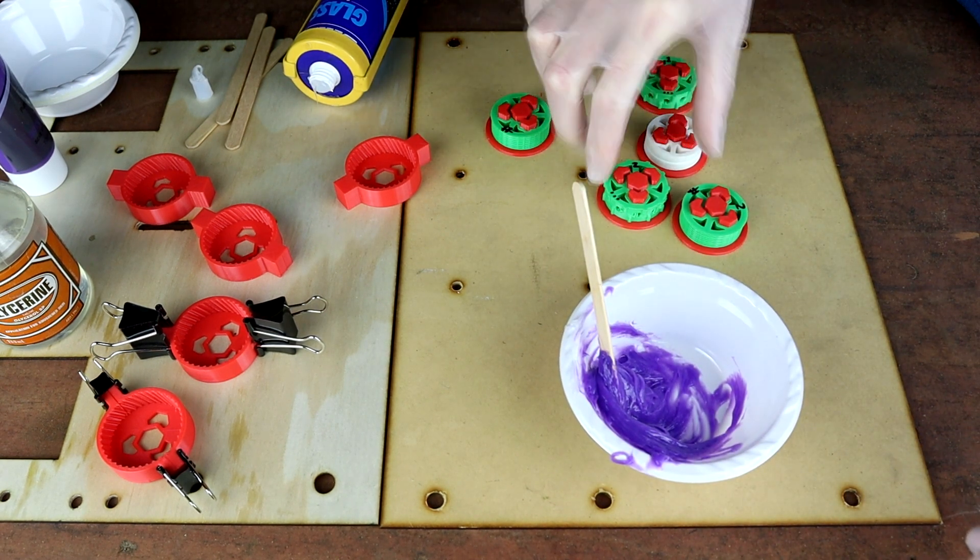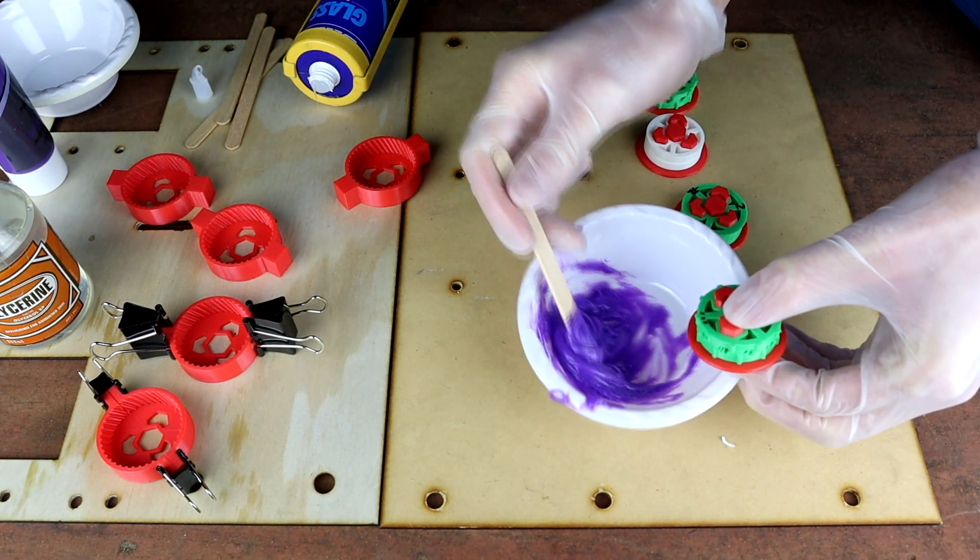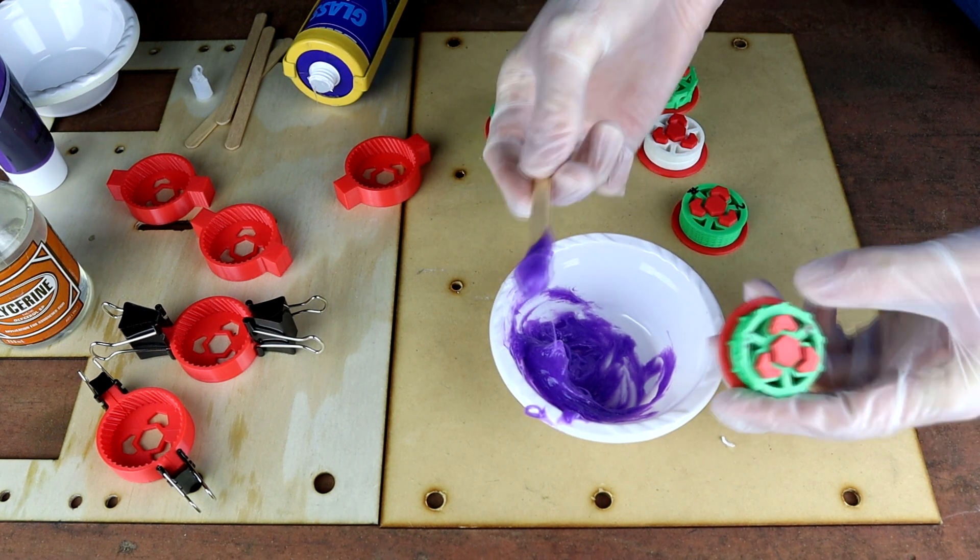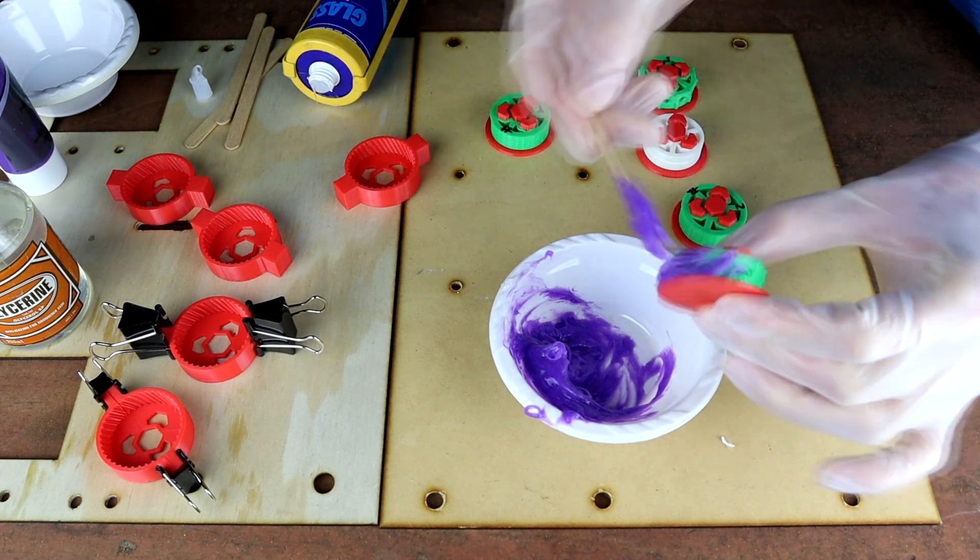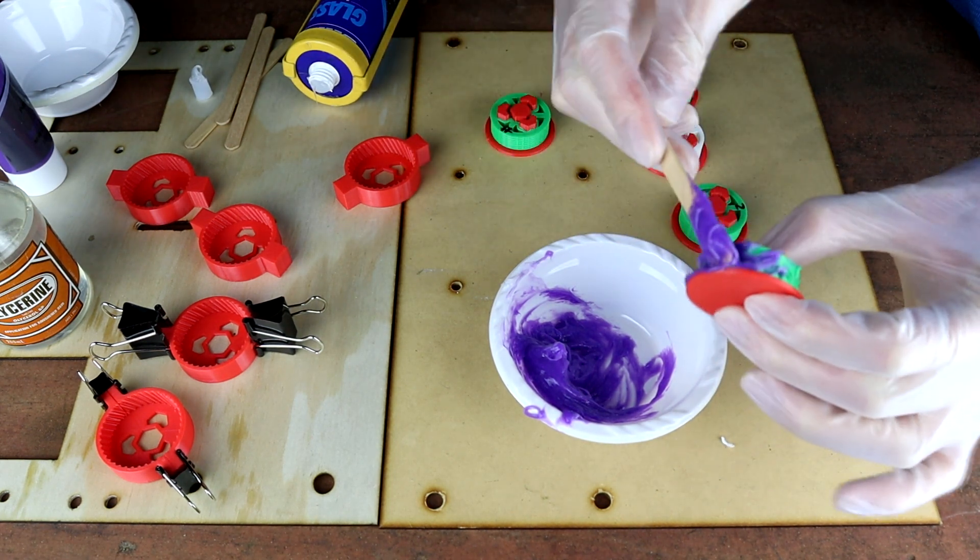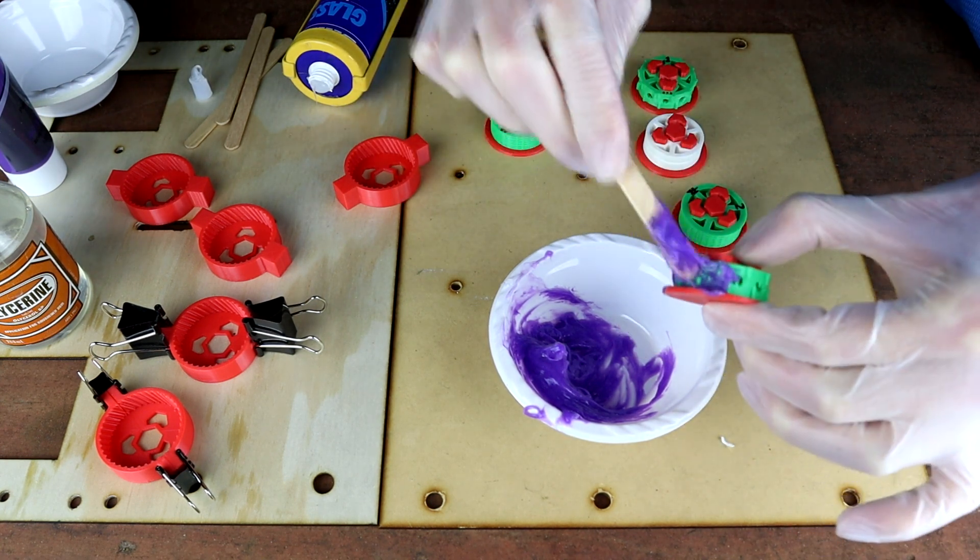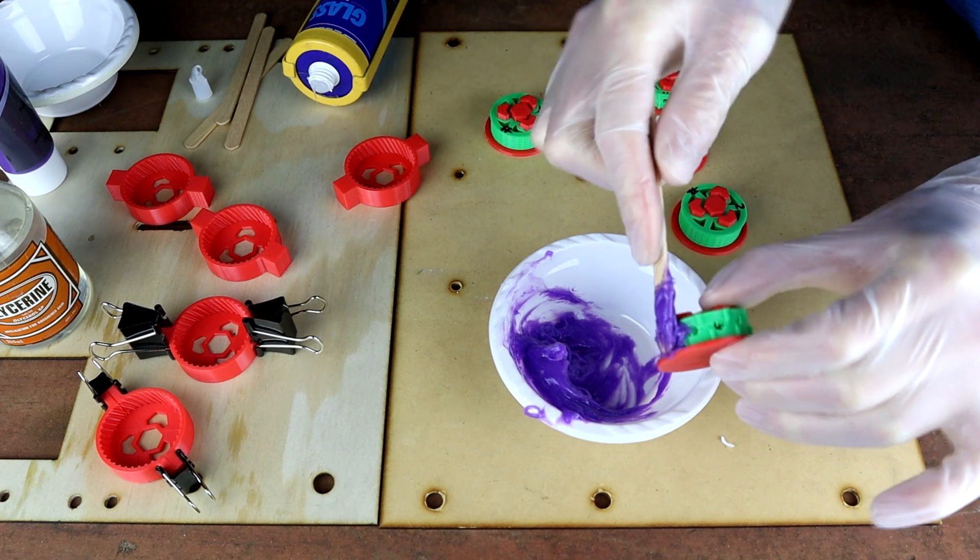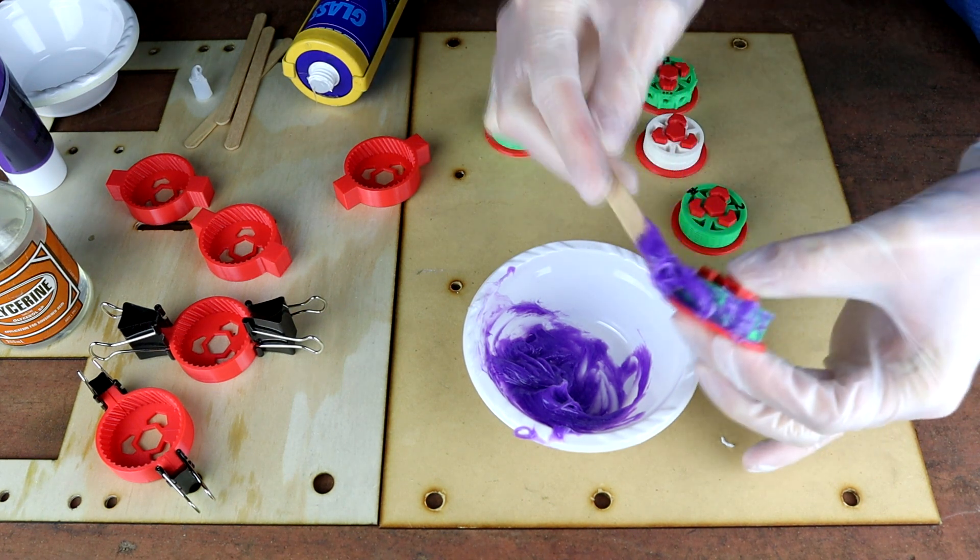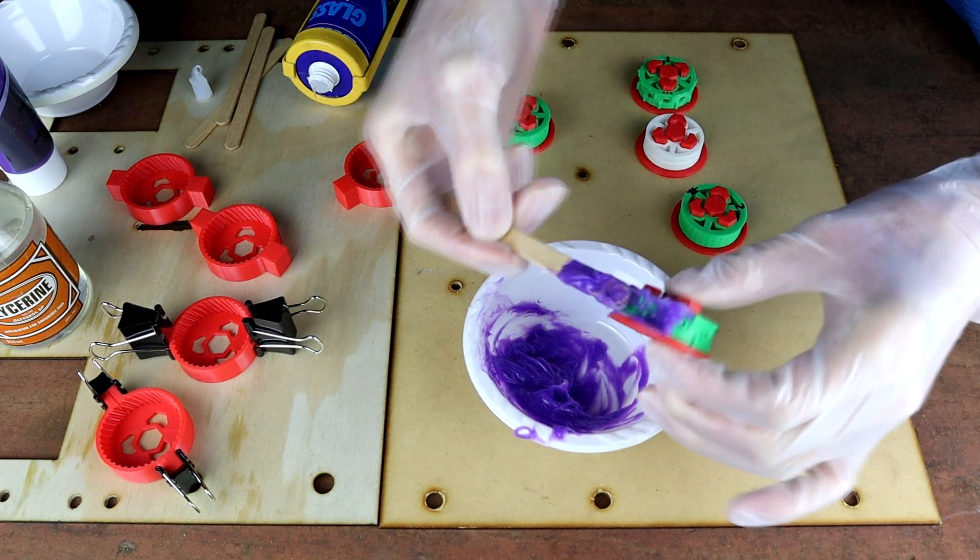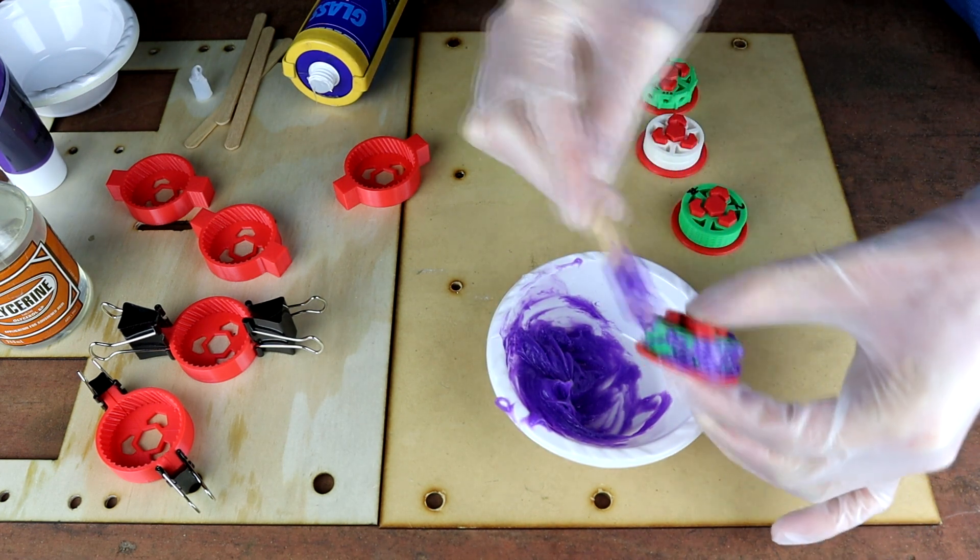So we are going to start by taking our pop stick and now this you can see is kind of a thick consistency. We're literally just going to smear this onto our part and try and force it into all of the cracks and all of the holes. Just push down as much as you can to get the silicon really in there. You will get excess everywhere. This is why you're wearing gloves. There is so much mess in this process. It's just part of it really.